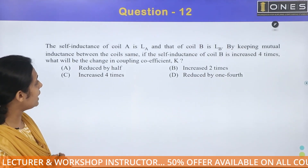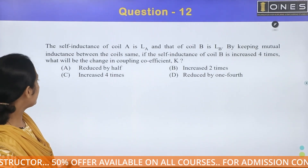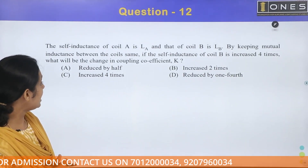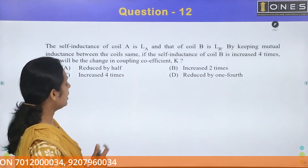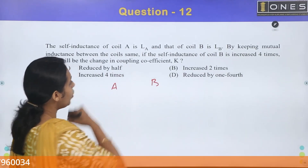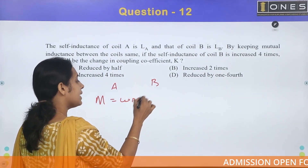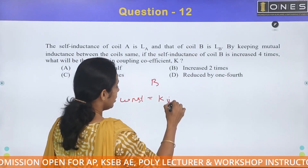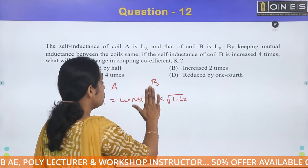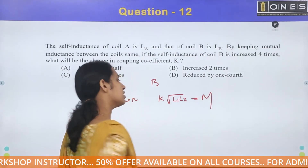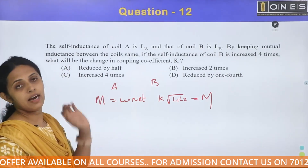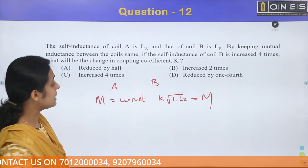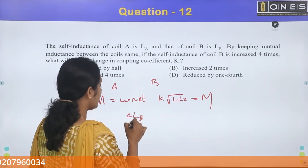Next question. The self inductance of coil A is LA and that of coil B is LB. By keeping mutual inductance between the coils the same, if the self inductance of coil B is increased four times, what will be the change in coupling coefficient K? The expression for mutual inductance is M = K × √(LA × LB). The self inductance of coil B is increased four times: LB_new = 4 × LB_initial.